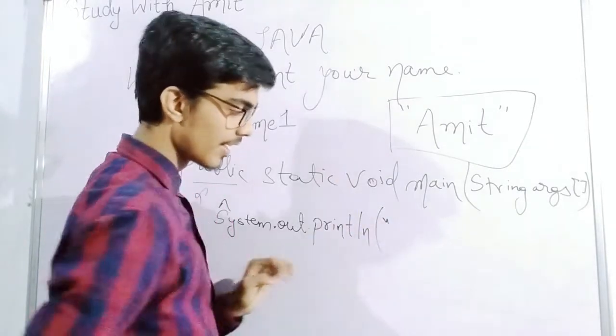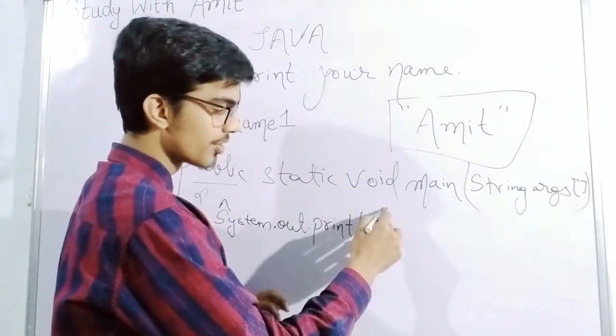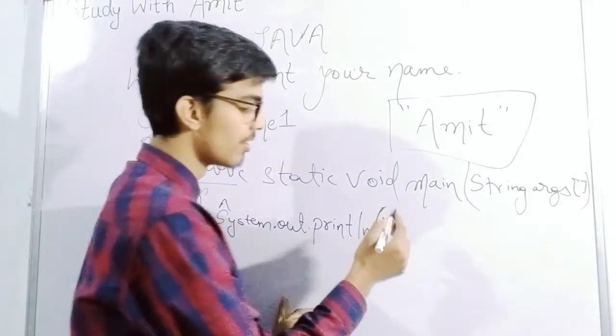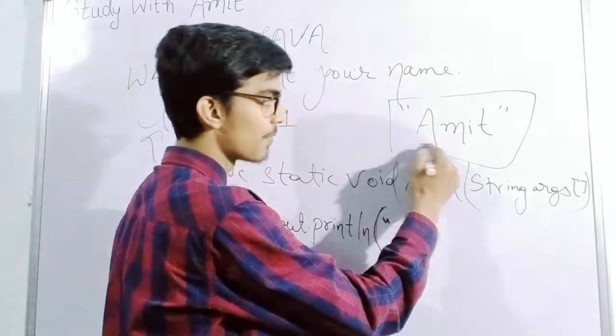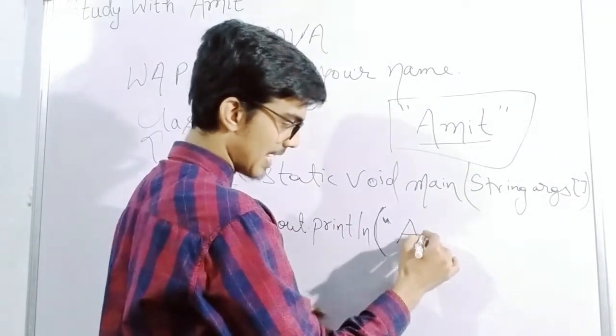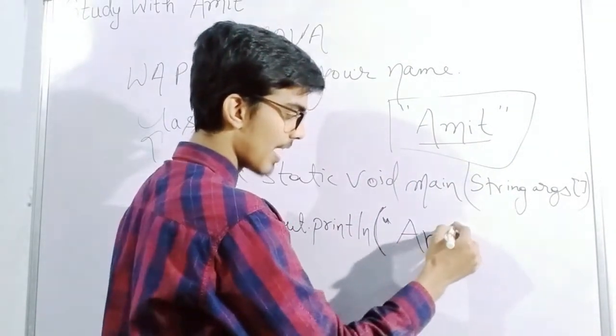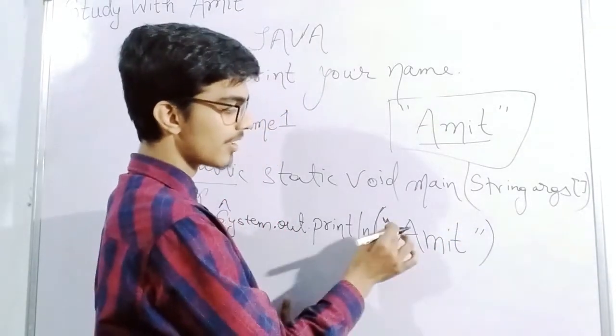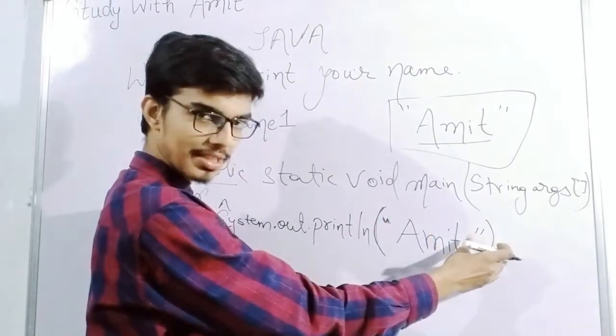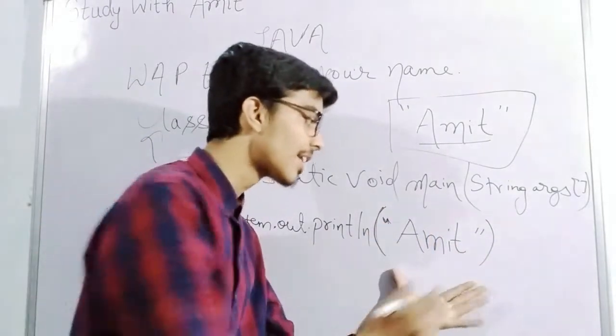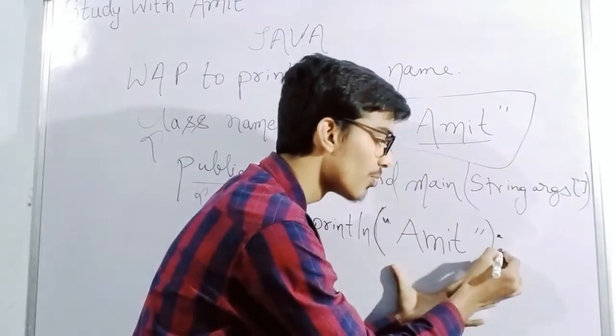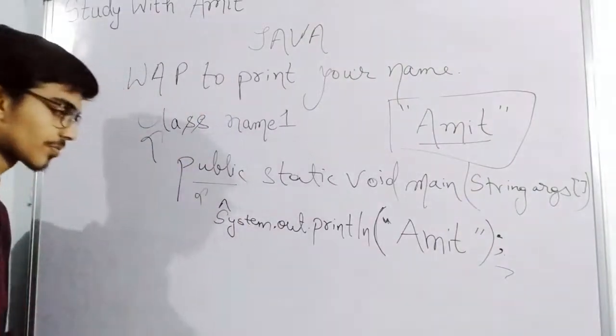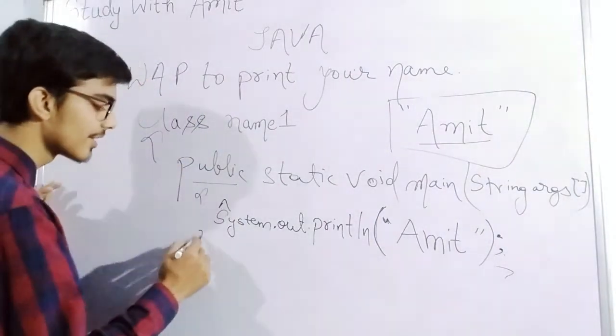Now here I have closed one bracket and put double quotes. Here I write, if I have to print Amit, I write Amit. This much we opened, so we have closed this. This is fine. After that, we'll put one semicolon. Semicolon is very necessary here.